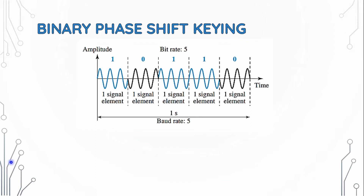In binary phase shift keying, we have two signal elements. One with a phase of 0 degrees and the other with a phase of 180 degrees. When we change the bit value across the waveform, we shift to 180 degrees. The bit rate is 5 and the baud rate is 5.